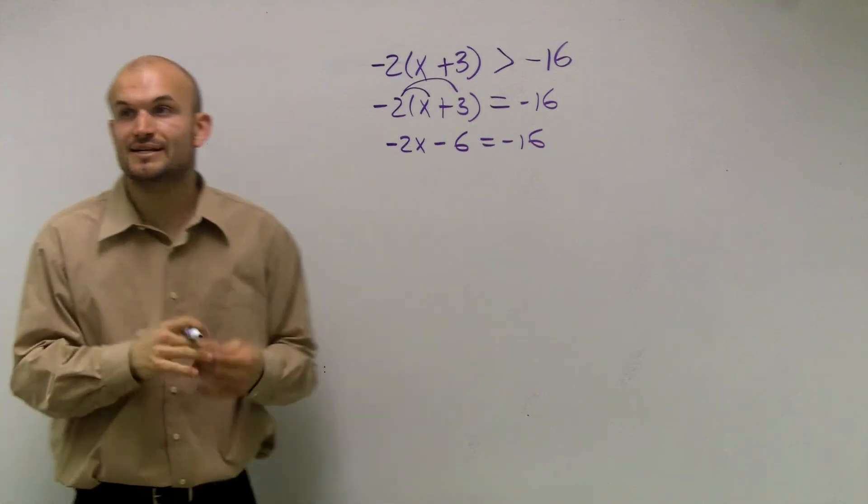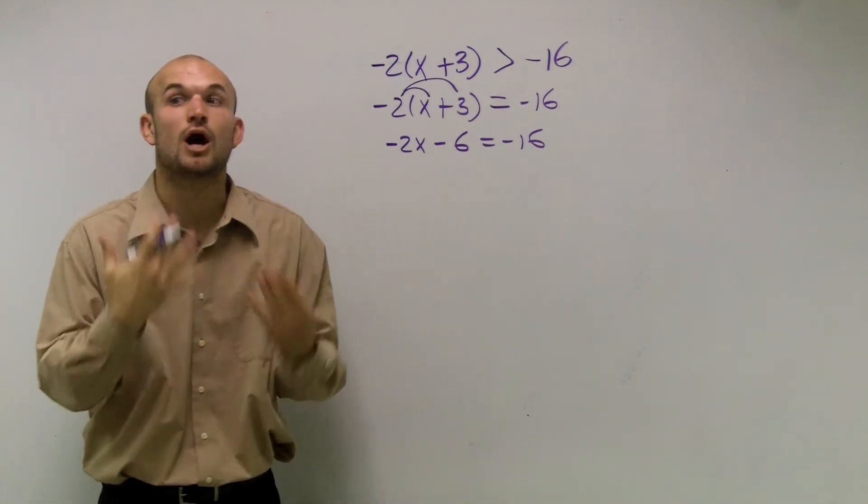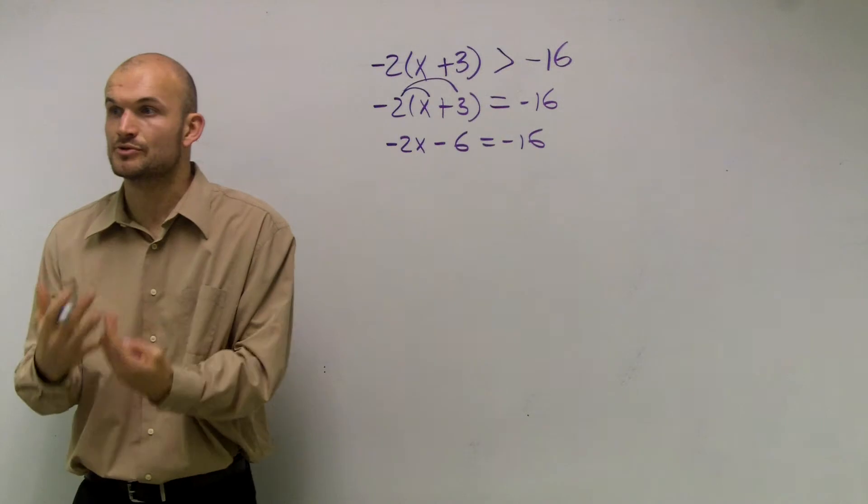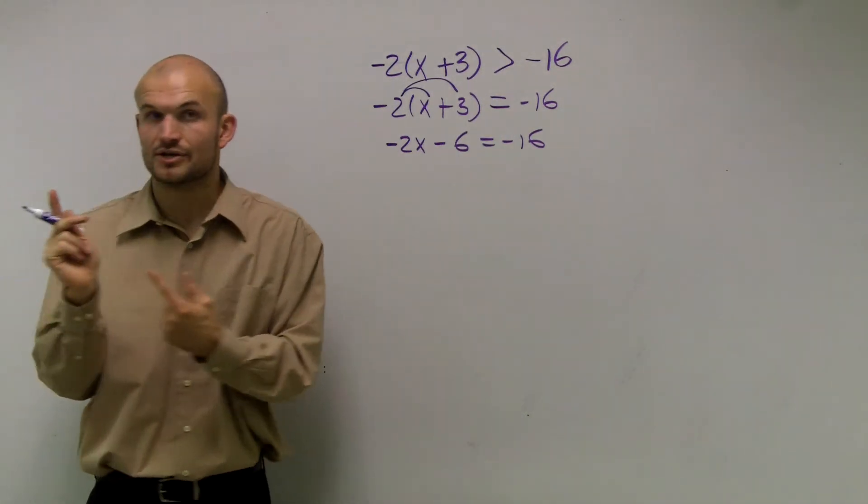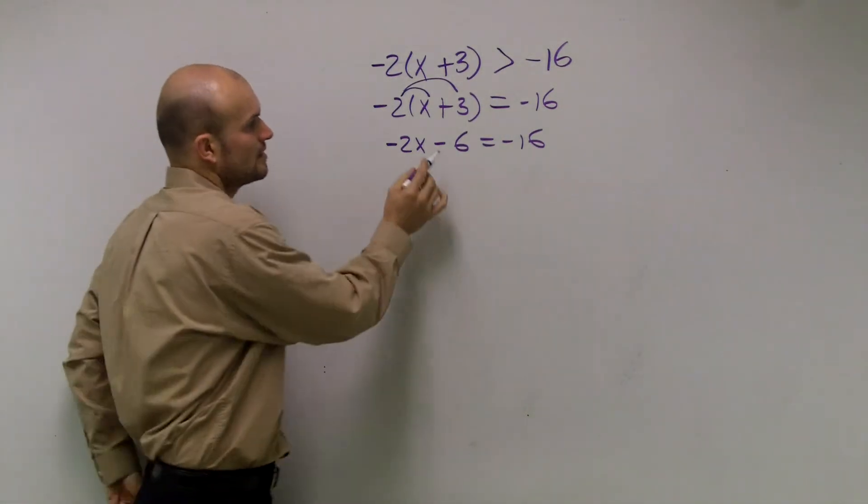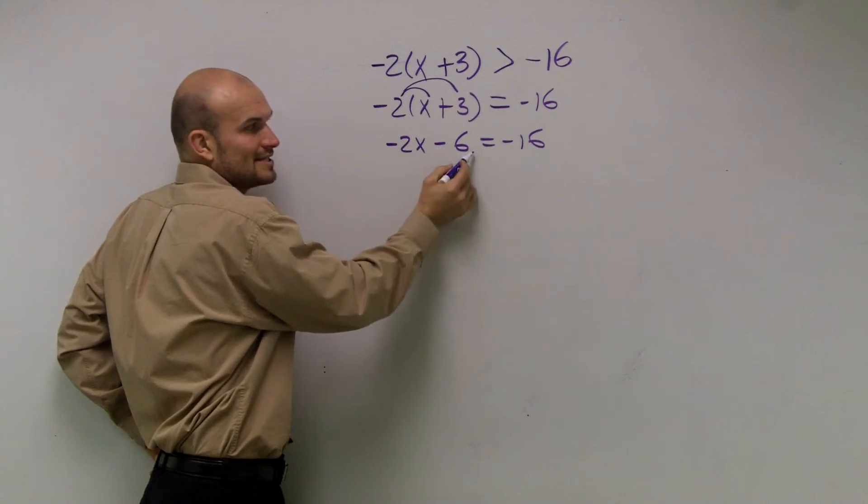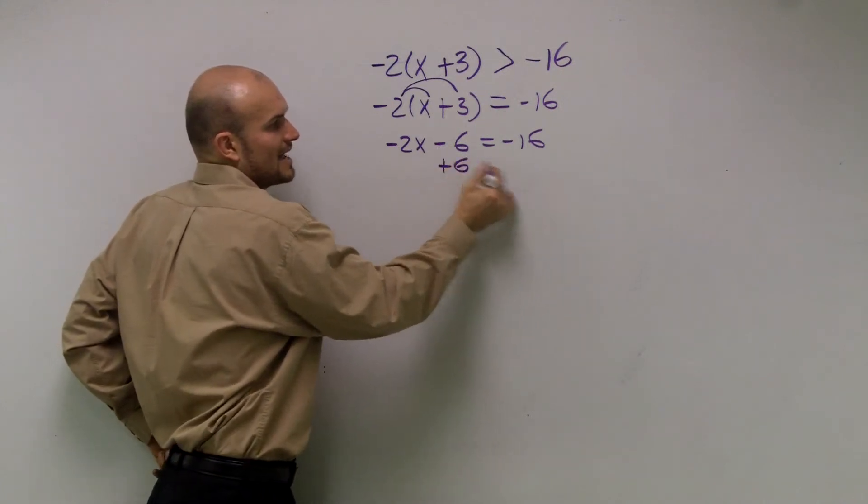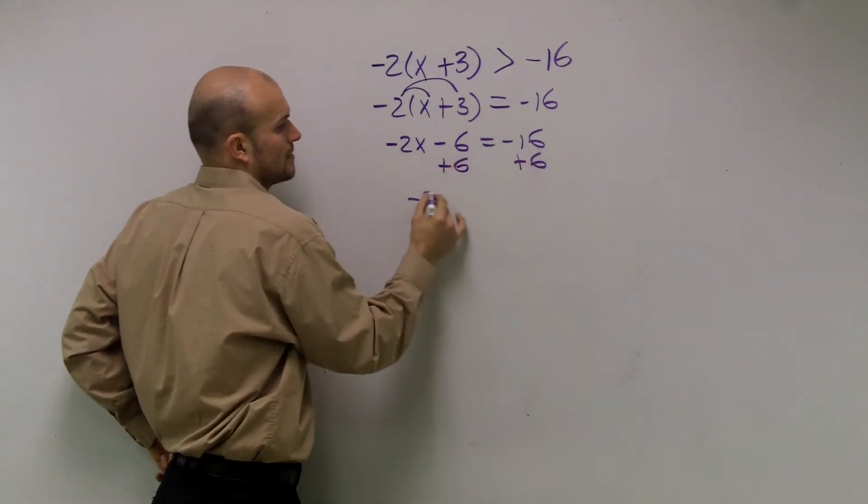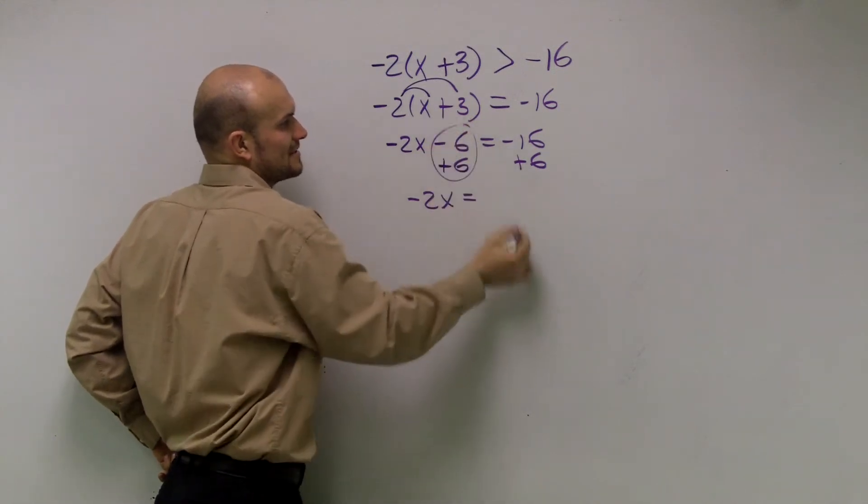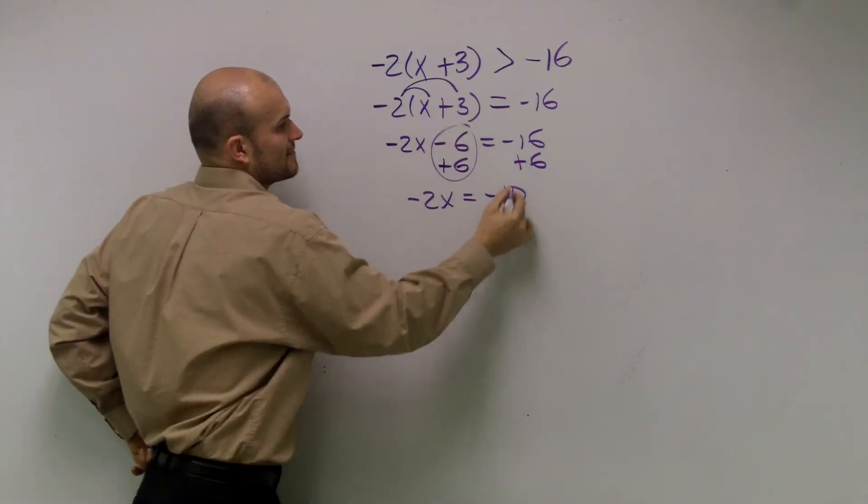Now we solve a two-step equation. We undo what's happening to the variable. First, undo addition and subtraction. The variable is being subtracted by 6, so we add 6.